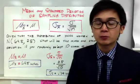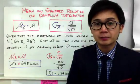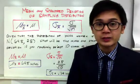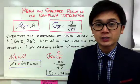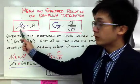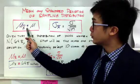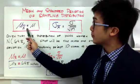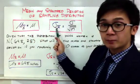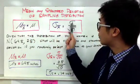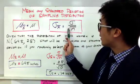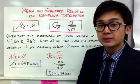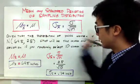Now that we've learned the central limit theorem, we will put that into use in finding the mean and the standard deviation of our sampling distribution. The formulas we will use are: mu of x is equal to the population mu, and the sampling standard deviation equals the population standard deviation divided by the square root of the sample size.